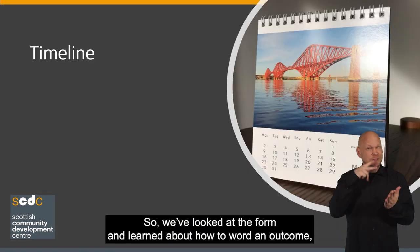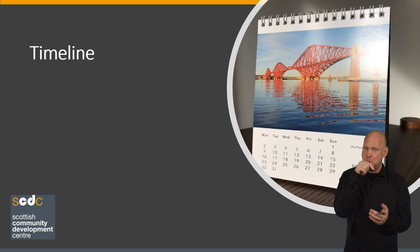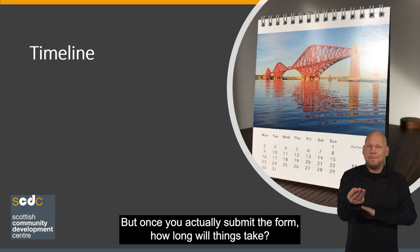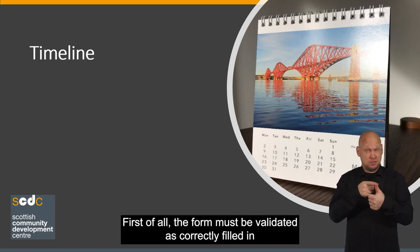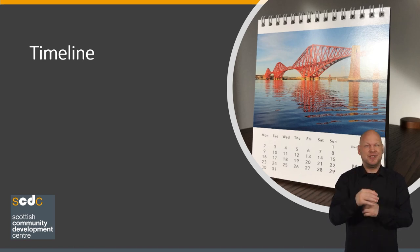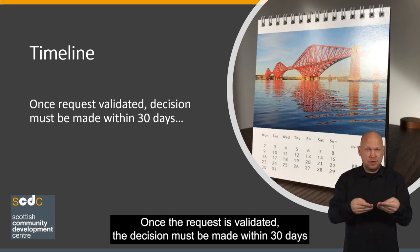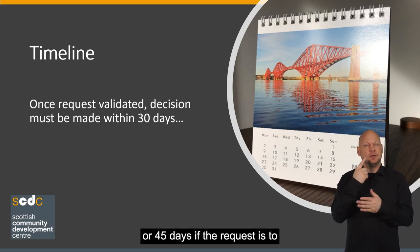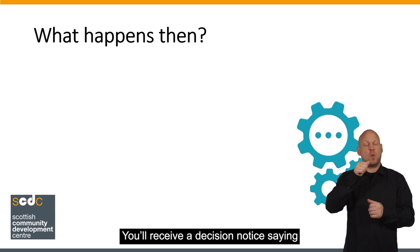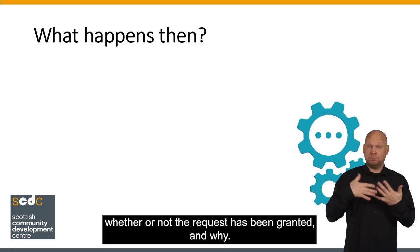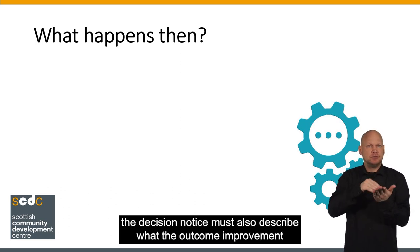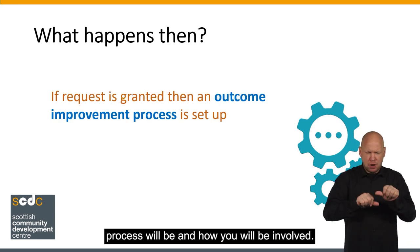So we've looked at the form and learned about how to word an outcome — you're pretty much there. But once you actually submit the form, how long will things take? First of all, the form must be validated as correctly filled in, and you should receive notification of this. Once the request is validated, the decision must be made within 30 days, or 45 days if the request is to more than one authority. You'll receive a decision notice saying whether or not the request has been granted and why. If your request has been agreed to, the decision notice must also describe what the outcome improvement process will be and how you will be involved.